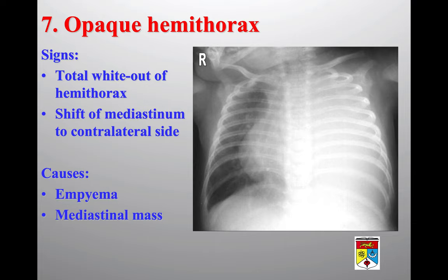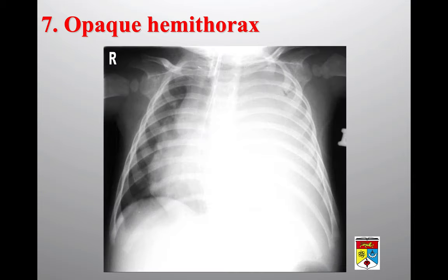An opaque hemithorax is a total, fairly homogeneous whiteout of one hemithorax, with complementary shift of the mediastinum to the contralateral side. As radiographic density can represent fluid, blood, or soft tissue, the differential includes a large pleural collection such as empyema, or a soft tissue mass such as a mediastinal mass. For example, an intubated child presenting with shortness of breath and a homogeneously opaque left hemithorax with mediastinal shift requires consideration of large empyema versus a huge mediastinal mass.